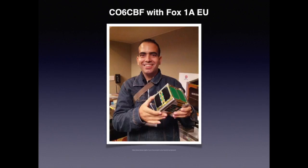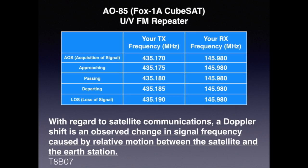CubeSats, like the FOX-1 satellite shown here, are small cube-shaped satellites — they're small and light because it costs a lot of money to put up satellites and they charge by the gram. Many of us have heard a train pass with a higher pitch approaching and lower pitch after it's passed. For the exam, know that in satellite communications, Doppler shift is an observed change in signal frequency caused by relative motion between the satellite and the earth station.